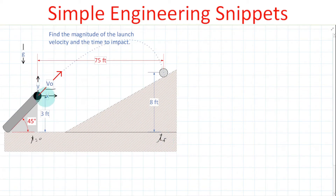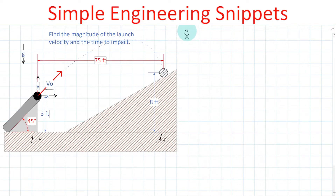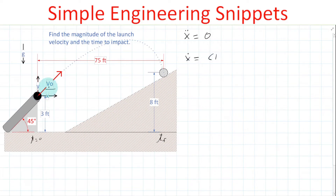We have X and Y directions defined, and we're going to be working through the equations of motion independently in those directions. Starting in the X direction: there are no forces in the X direction because we are discounting air resistance. So my second derivative with respect to time, applying Newton's second law, is equal to zero. Integrating that introduces an integration constant C1. X-dot, the speed, is constant, and I can express that constant in terms of the initial speed in the X direction as V-naught cosine 45 degrees.